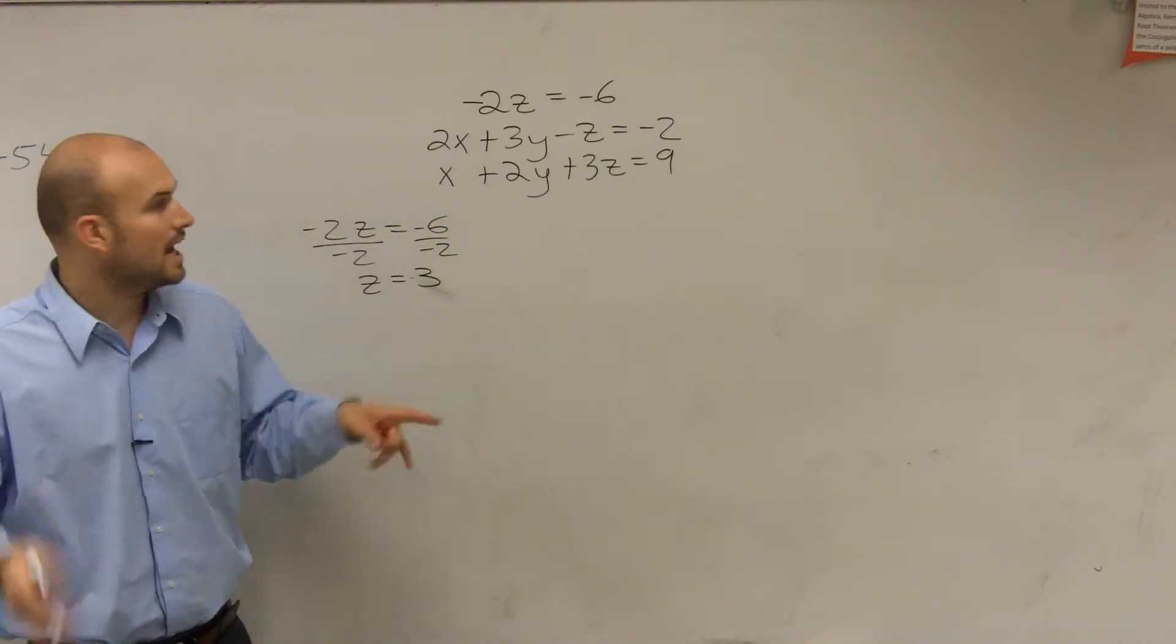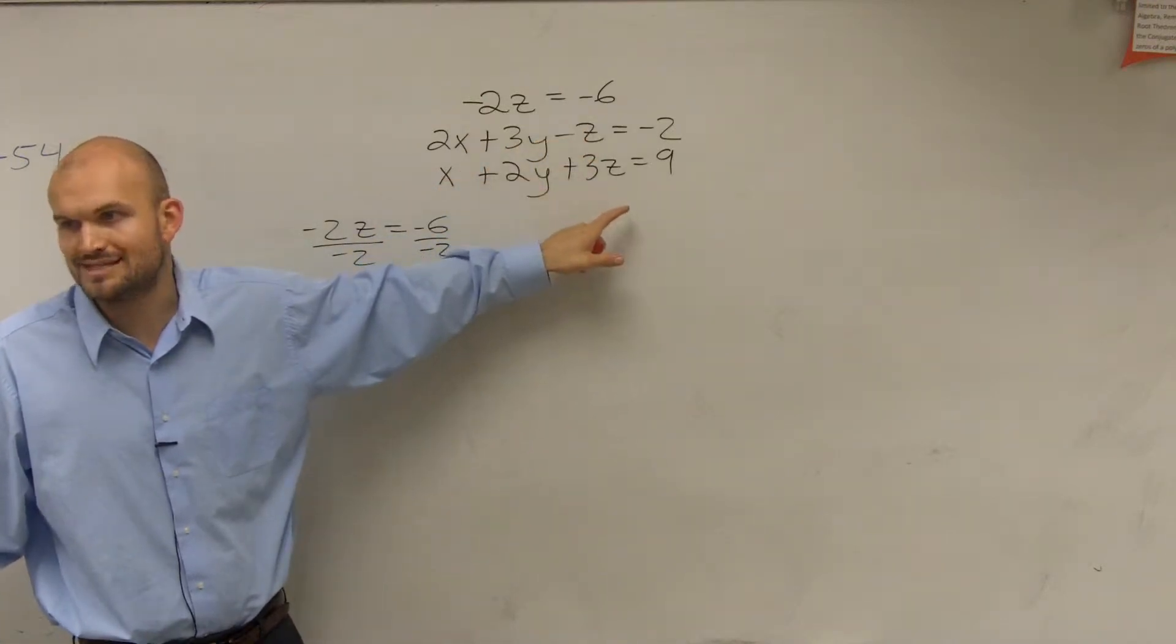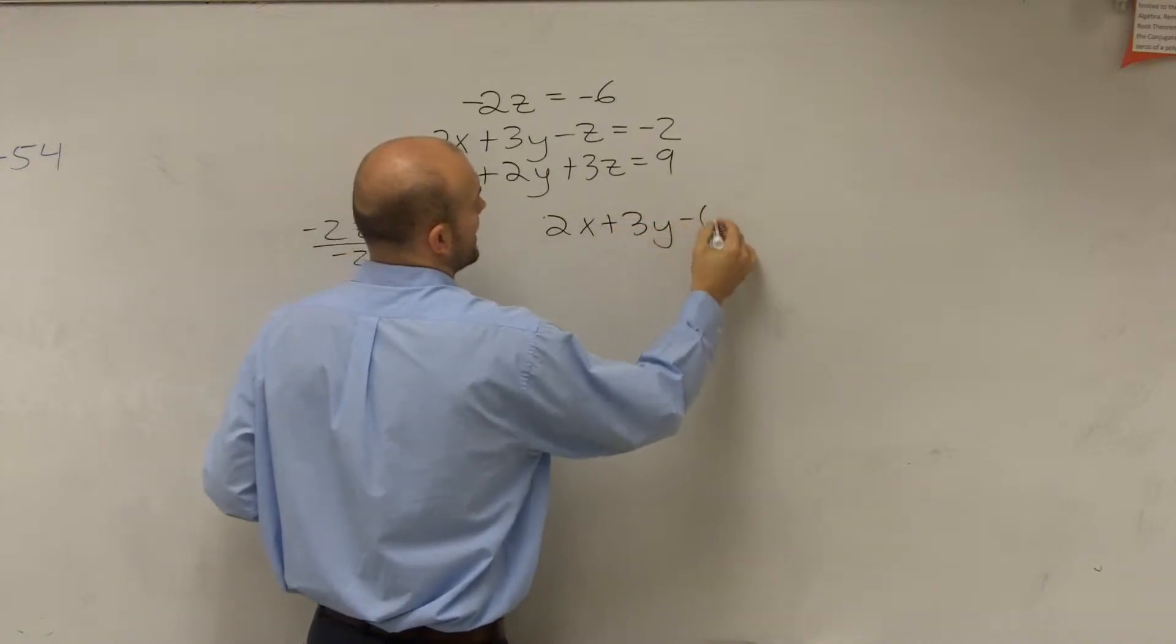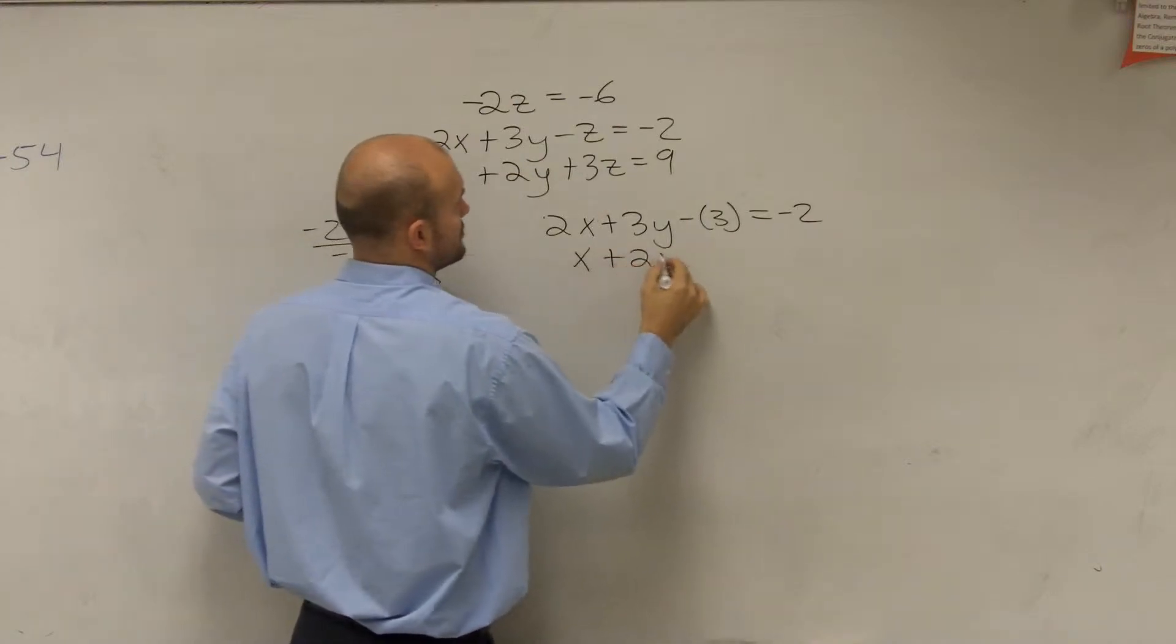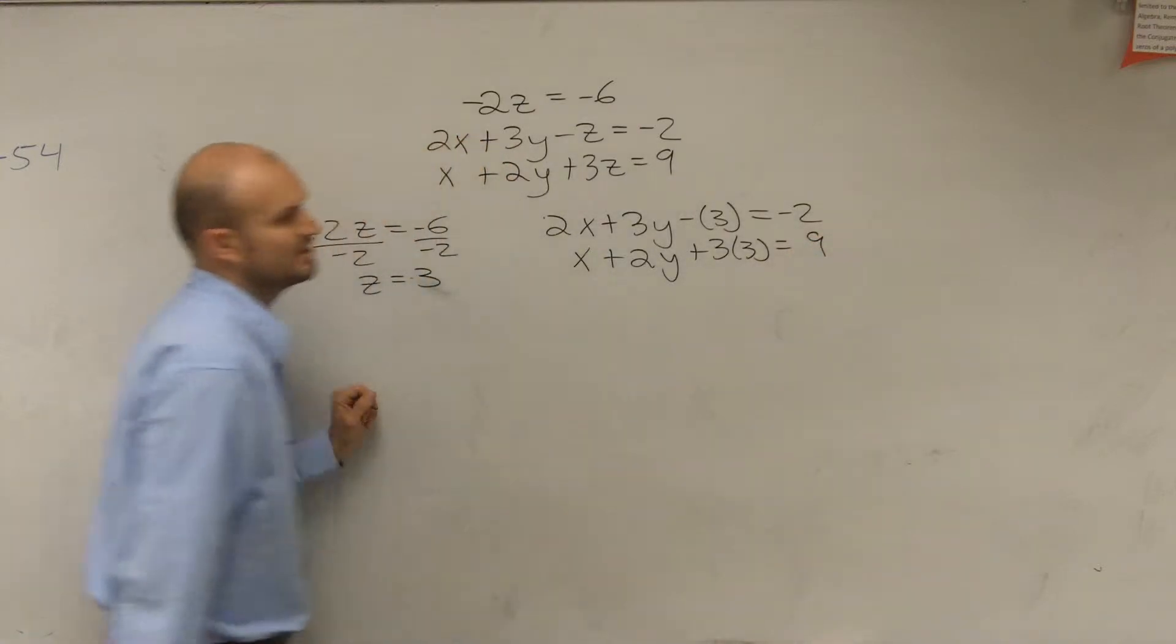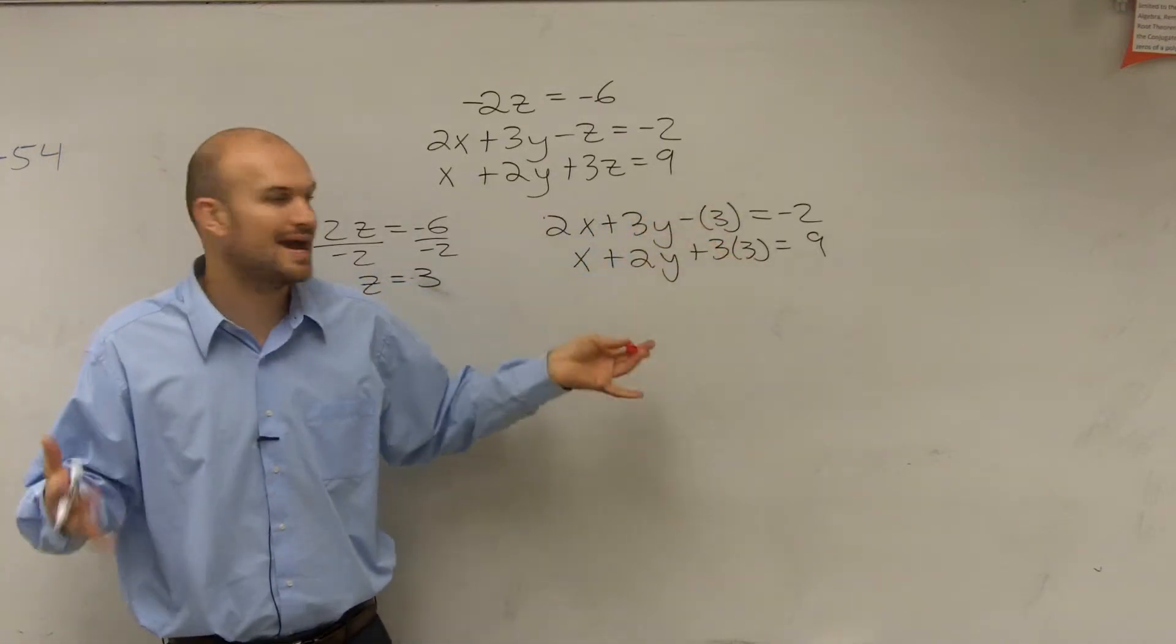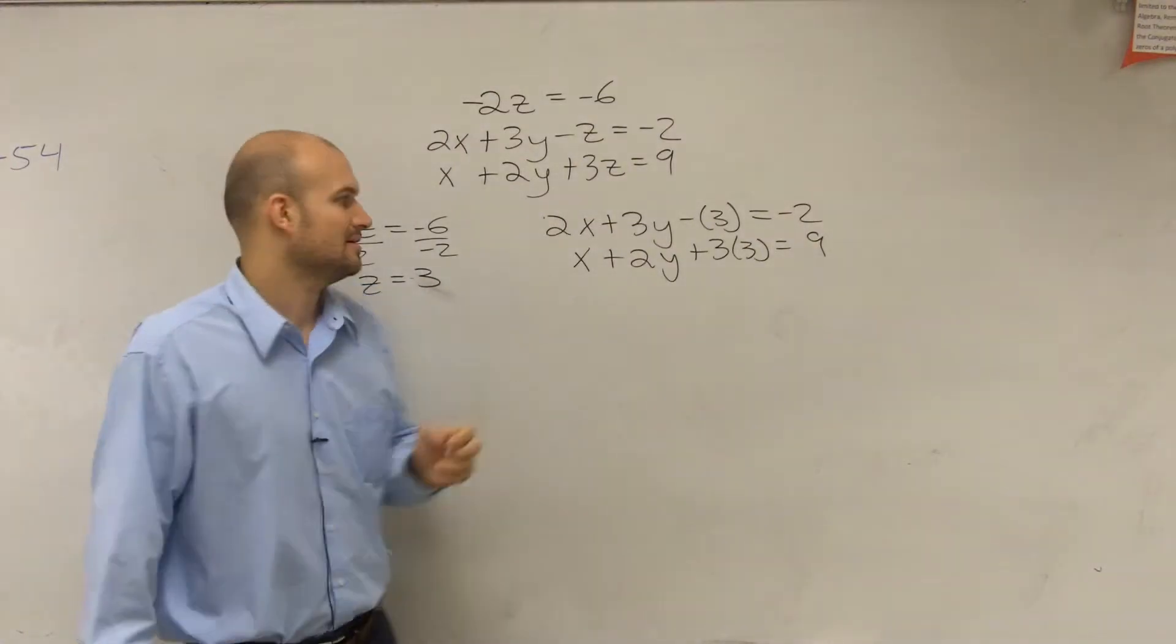Correct. Now, if I plug in 3 into z for both of those, do I now have to worry about my z variable? Because I know what the value of z is now, right? So let's do that. So let's do 2x plus 3y minus 3 equals negative 2. And then I have x plus 2y plus 3 times 3 equals 9. So do you guys see what I did? I just took in my value of z, and I plugged it in for z. Now, do I have two equations with two variables? I do, don't I?